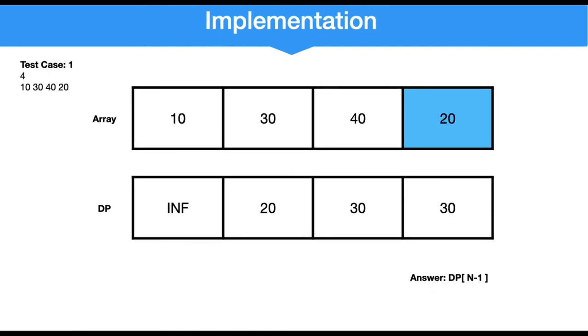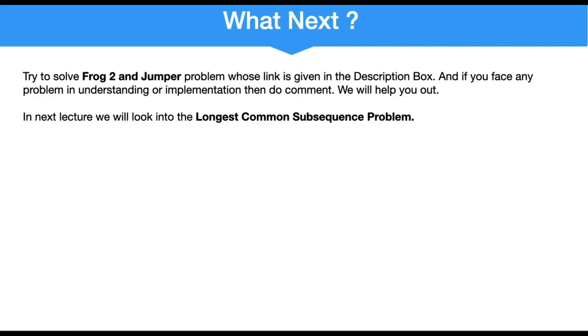Hope that you have understood this problem well. For practice, we have frog2 and a jumper problem whose link is given in the description box. If you face any problem in understanding or implementation, do comment and we will help you out. In the next lecture we will look into the longest common subsequence problem. Until then, keep coding. Thank you for watching and bye.